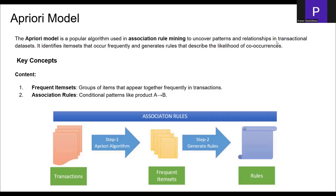The second key concept is association rules, built by the Apriori algorithm — similar to an if-then condition. If product A occurs more frequently, then product B would be a proper suggestion for product A. As shown in the diagram, we get transactional data, apply the Apriori algorithm, identify frequent item sets, and based on those generate the rules.